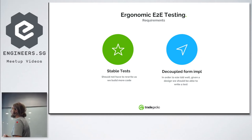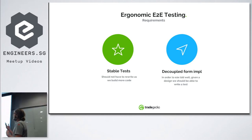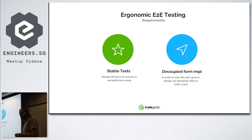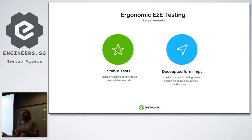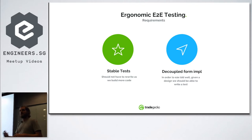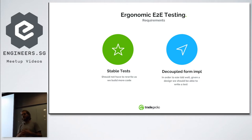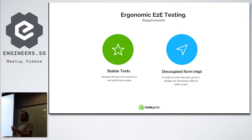What does ergonomic testing mean? Tests should be stable — if you change the guts of your code and the output is the same, your tests should not break. For that to happen, tests must be decoupled from the implementation, so if you receive a design you should be able to write a test for it without knowing how you'll implement it.